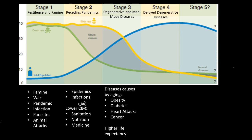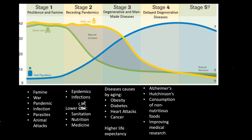Stage four has delayed degenerative diseases. Alzheimer's and Huntington's are two good examples, primarily found in the elderly, along with dementia. Cancer is also getting bigger as well. We also see the consumption of non-nutritious foods — pudding cups are a good example, they're not nutritious, they're specialty luxury foods, not like carrots or bananas which are naturally grown. And we see improving medical research — people know how to treat cancer, obesity, and diabetes, but they're still dying from it. There are ways to prevent or treat these conditions.